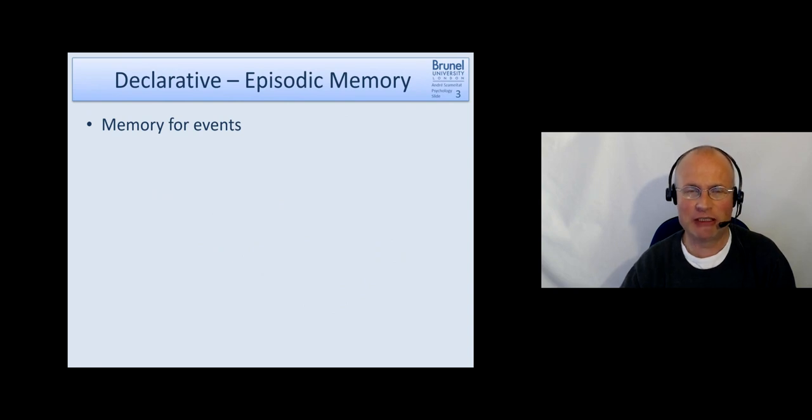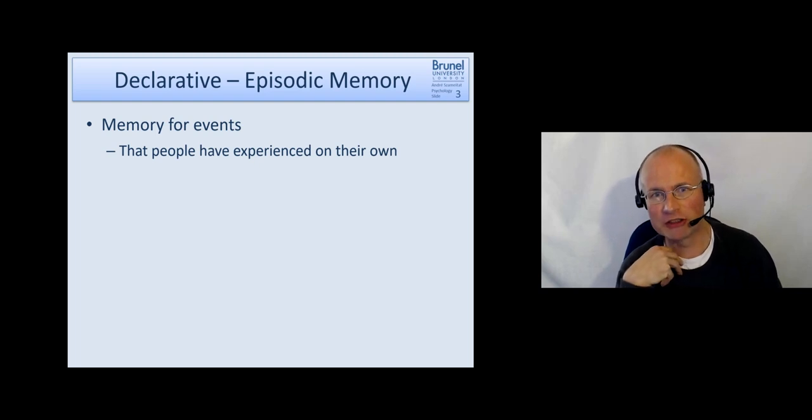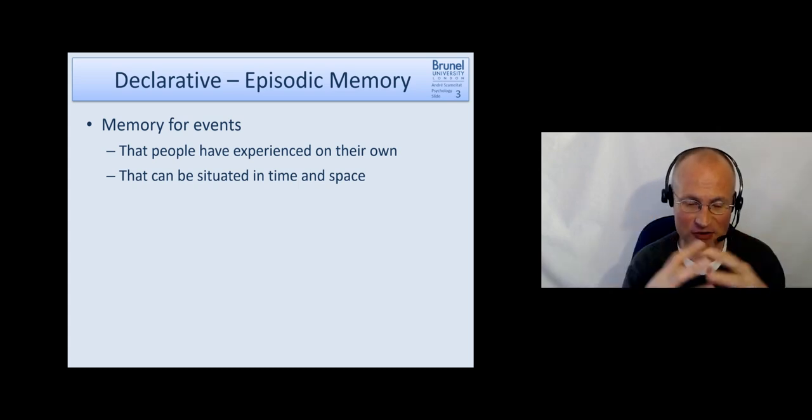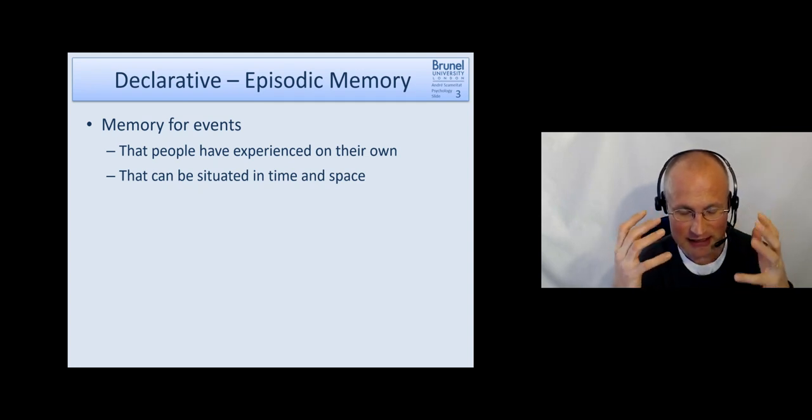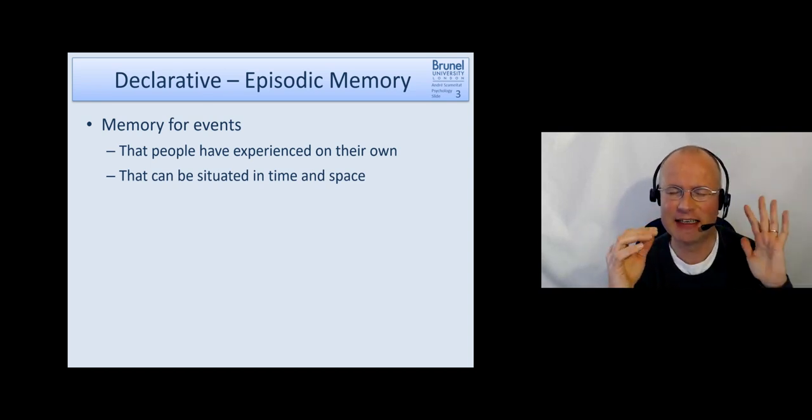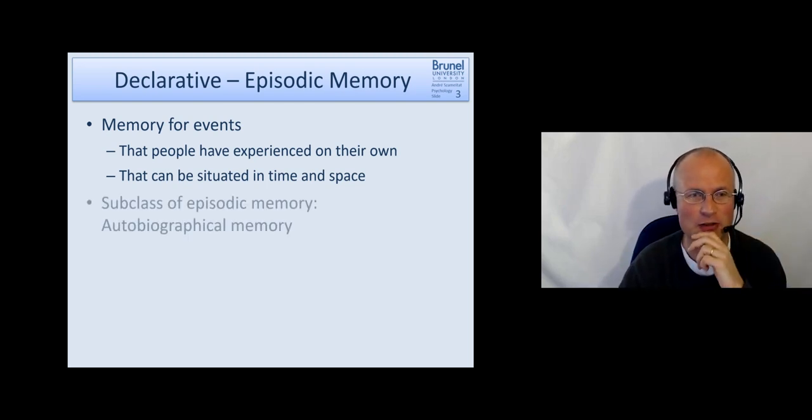Episodic memory is memory for events. It's not about factual knowledge of something we know has happened, but our own personal experience of such events. This episodic memory has certain features and characteristics. One of them is that it can be actually situated in time and space. So we do a kind of mental time travel and we know okay, then this happened and it was there. This is a typical feature.